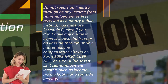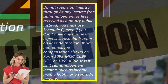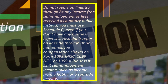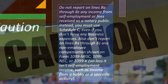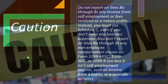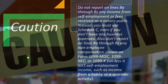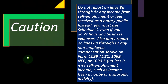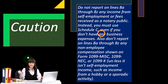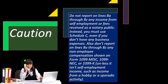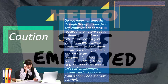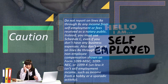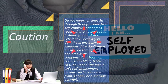Do not report on lines 8A through 8Z any income from self-employment or fees received as a notary public. Instead, you must use Schedule C even if you don't have any business expenses. Also, don't report on lines 8A through 8Z any non-employee compensation shown on Form 1099 Miscellaneous, 1099-NEC, or 1099-K, unless it isn't itself self-employment income, such as income from a hobby or a sporadic activity.